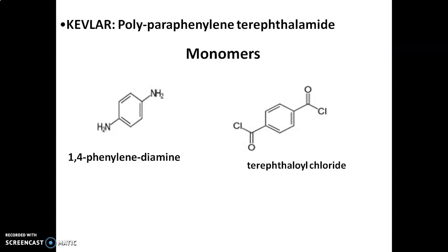This monomer is an example of condensation polymerization. What do you mean by condensation polymerization? Condensation polymerization is a type of polymerization in which, during the polymerization, small molecules such as water, NH3, or HCl are eliminated. Here also, during the polymerization of polyparaphenylene terephthalamide, small molecules of HCl will be eliminated from 1,4-phenylene diamine and terephthaloyl chloride. That's why Kevlar is placed under condensation polymerization.